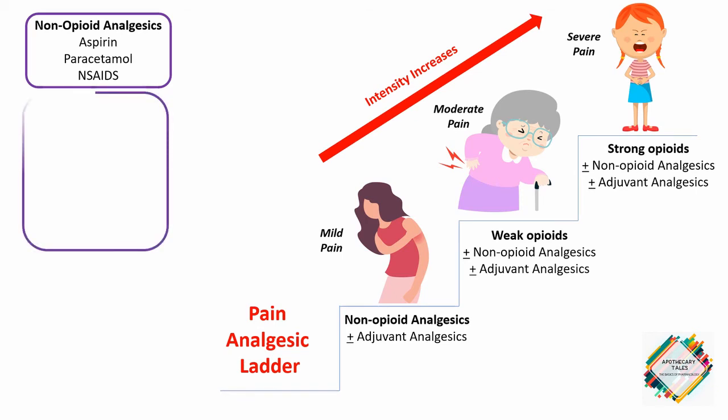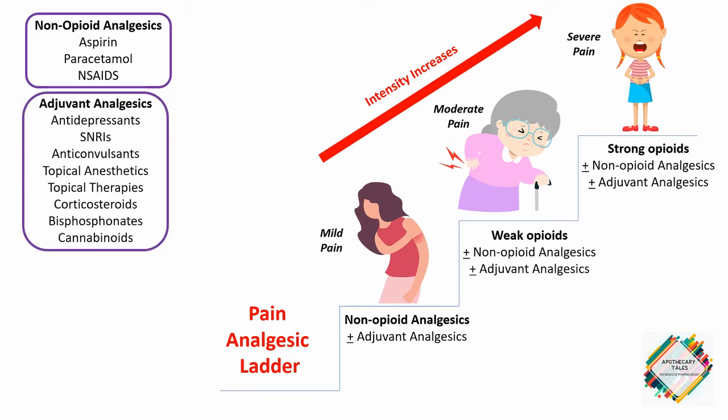Talking about the adjuvant analgesics, which basically refers to a set of drugs that belong to different classes. Although their administration is typically for indications other than pain treatment, these medications can be of particular help in various painful situations. So the adjuvants are actually acting as co-analgesics, which include drug classes such as antidepressants, SNRIs, anticonvulsants, topical anesthetics, topical therapies, corticosteroids, bisphosphonates, and cannabinoids.